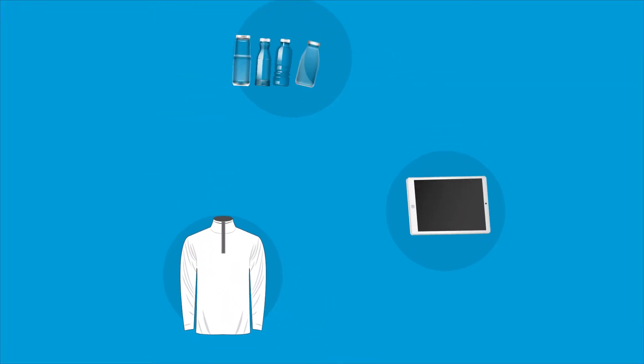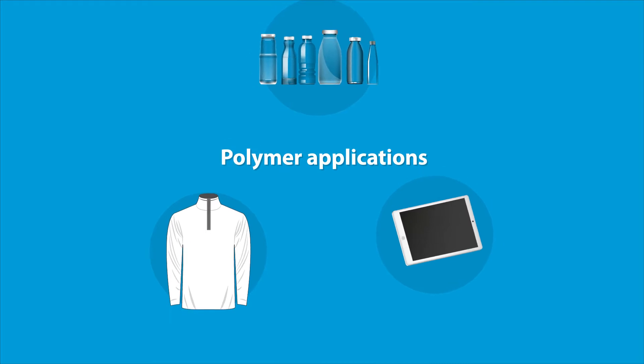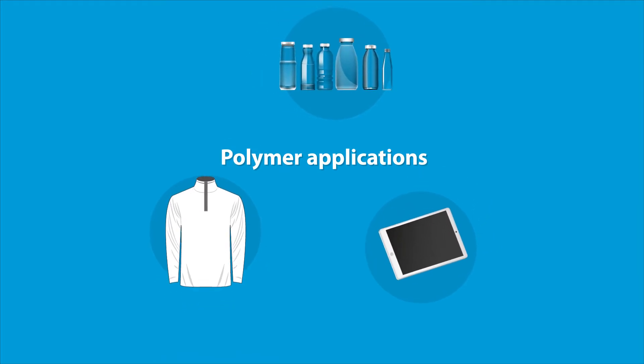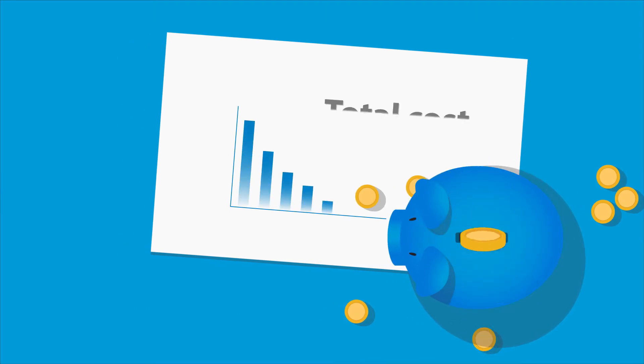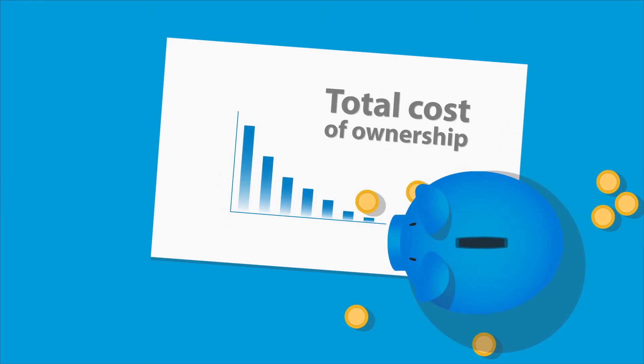From touchscreen films to polyester materials for textiles and plastic bottles, filtration is an important step in the production of polymer applications. The aim is to achieve the cleanest possible product while keeping the total cost of ownership low.